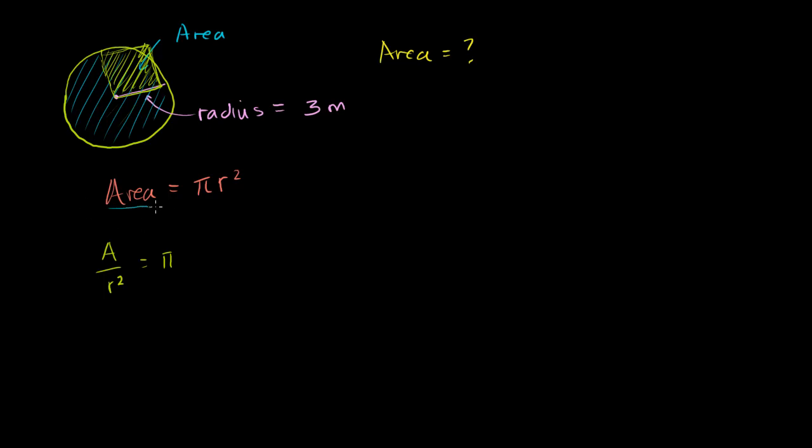So in our example, the area is equal to π times 3 meters squared, which is equal to π times 9 meters squared. Or the conventional way to write this, this is equal to 9π meters squared.